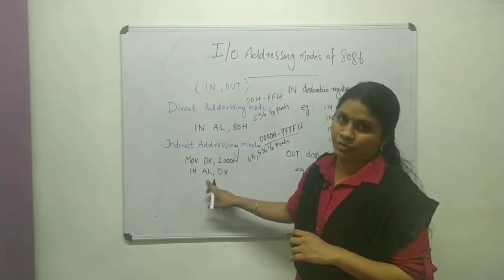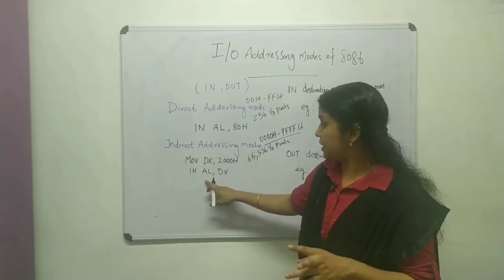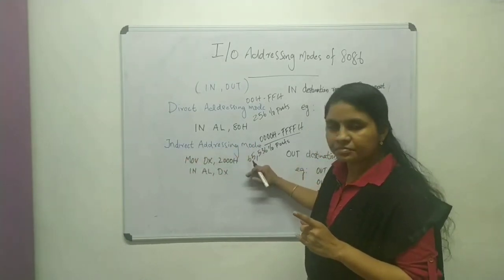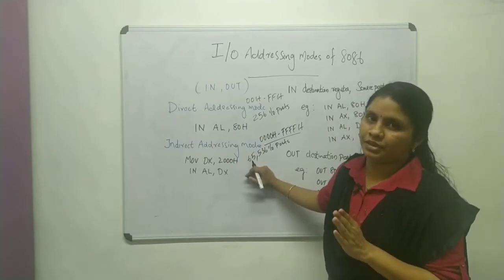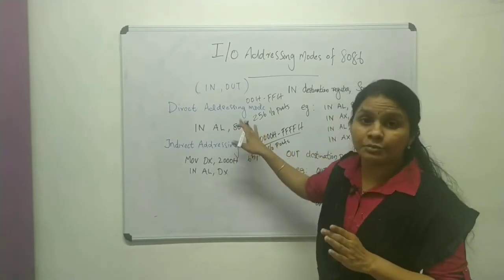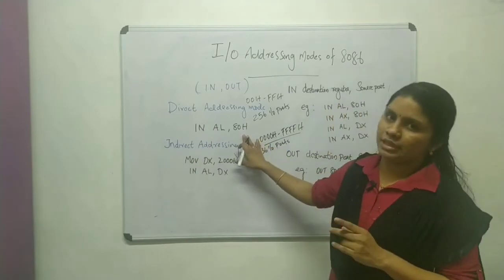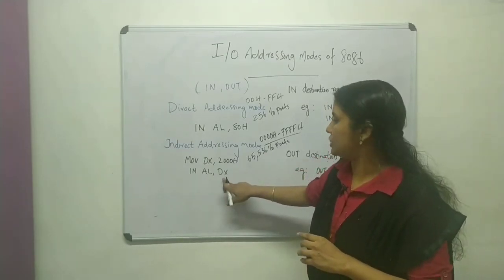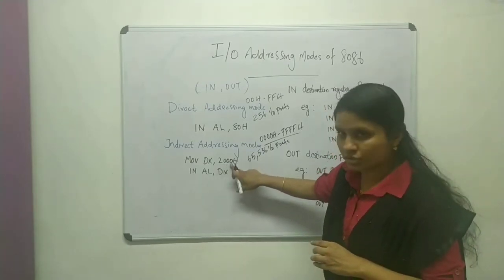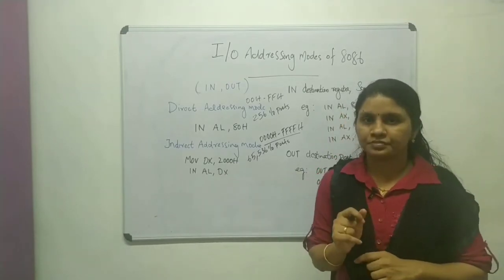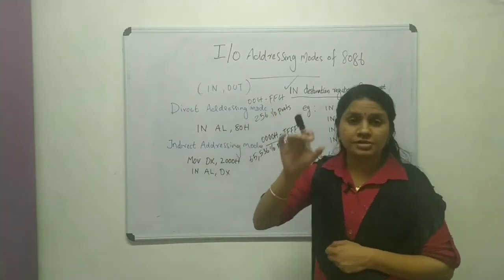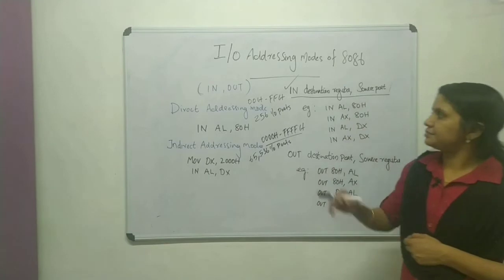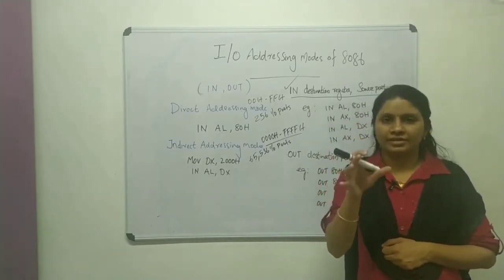So in indirect addressing mode, AL gets data from the I/O port address given by DX register. In direct addressing mode, the I/O port address is directly specified in the instruction itself, while in indirect addressing mode it is given by the DX register. Also, direct addressing mode is called fixed port addressing, and indirect addressing mode is called variable port addressing.